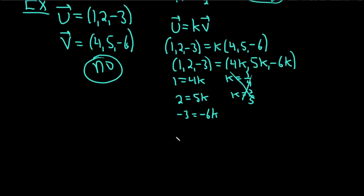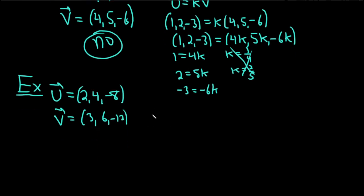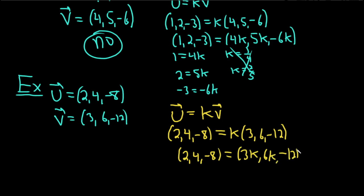One more example — again with vectors having three components. Let's try u = (2, 4, negative 8) and v = (3, 6, negative 12). Same approach: let's try to force them to be multiples. So u = k times v gives (2, 4, negative 8) equals k times (3, 6, negative 12). Distributing k gives (3k, 6k, negative 12k).